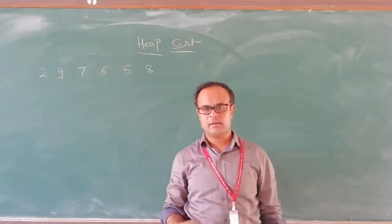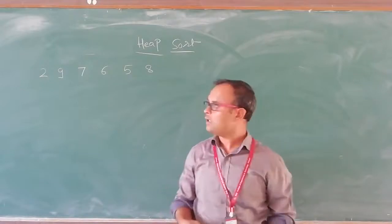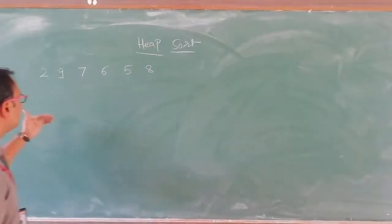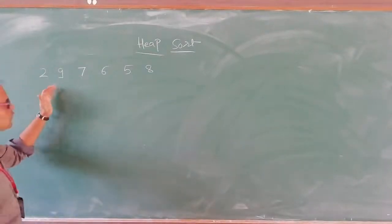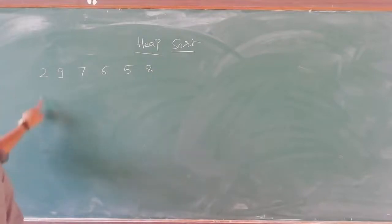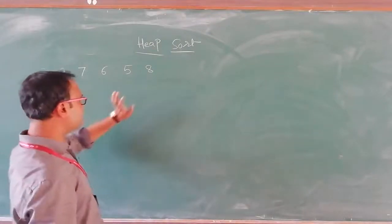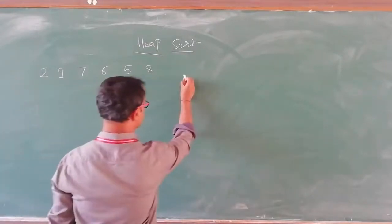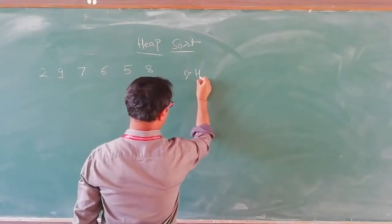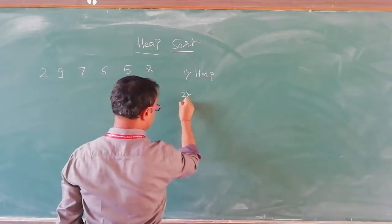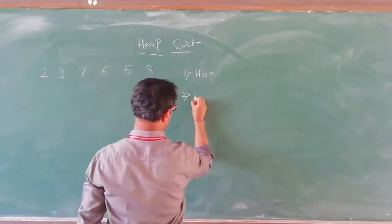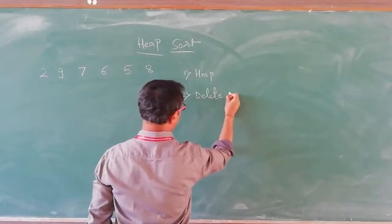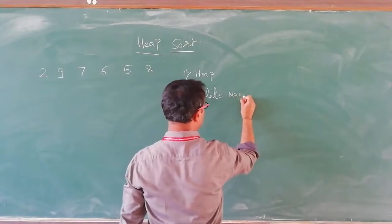Having understood what a heap is and how to construct one, let us move on with heap sort. It is another sorting technique where given elements have to be sorted in ascending or descending order. Heap sort works in two different stages: first it creates a heap, and in the second stage it performs deletion of the maximum node.